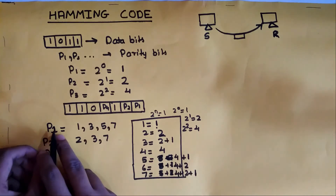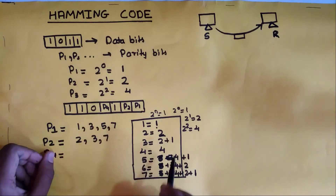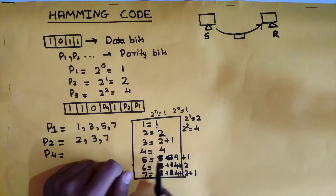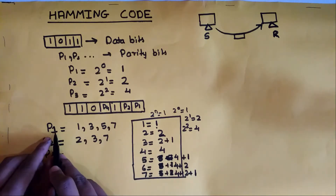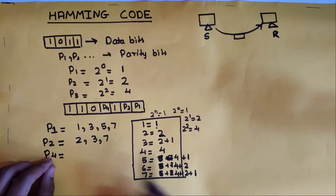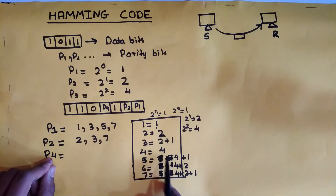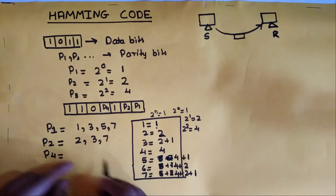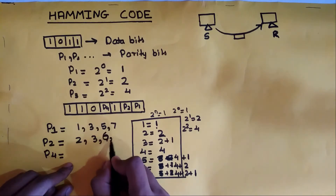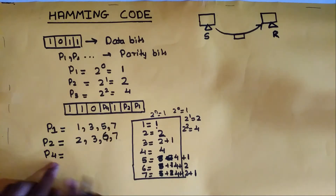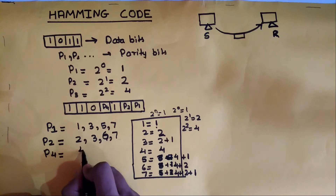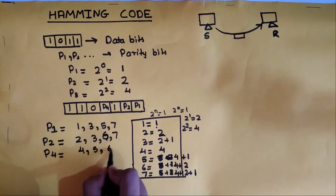For P1, we find all positions where 1 appears in the split: positions 1, 3, 5, and 7. For P2, we find all positions where 2 appears: positions 2, 3, 6, and 7. For P4, we find all positions where 4 appears: positions 4, 5, 6, and 7.